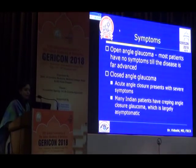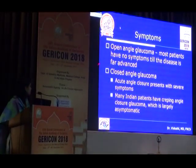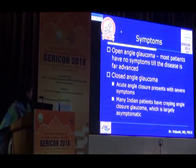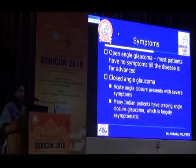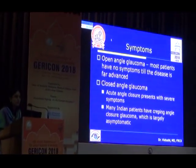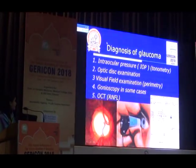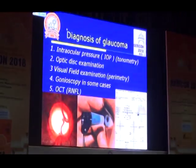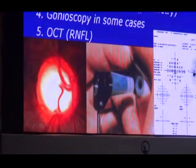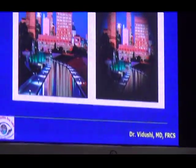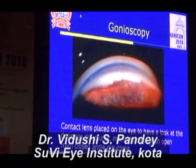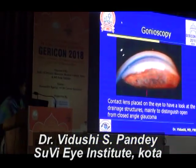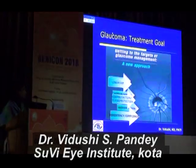As mentioned, open angle glaucoma is largely asymptomatic until very advanced. Closed angle glaucoma presents with severe symptoms, but many Indian patients have what is called creeping angle closure glaucoma, which also presents like open angle — asymptomatic until a very late stage. For diagnosis we do intraocular pressure measurement, optic disc examination, and visual fields. In some cases we do gonioscopy, where you put a contact lens on the eye and actually see the angle structures to differentiate between open angle and closed angle glaucoma. This is the restriction of visual field and the optic disc cupping that we look for.